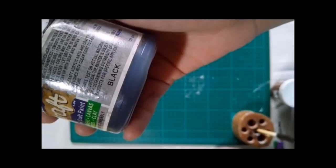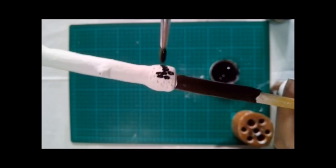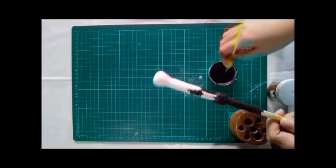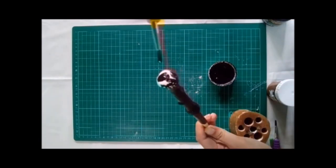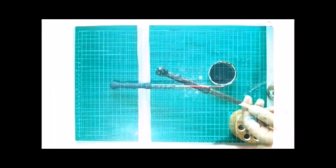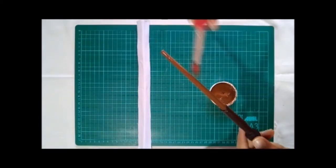For the handle, we are going to use color black. Make sure you completely paint the holes. And of course for the bottom, we are going to paint it with brown.